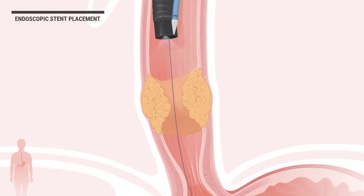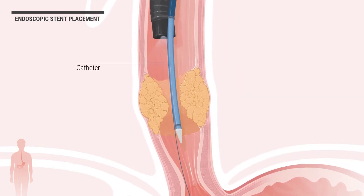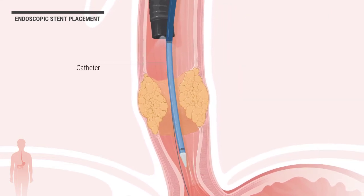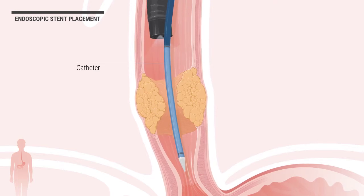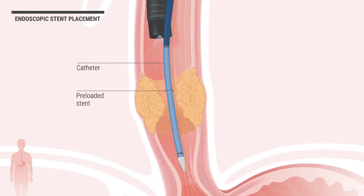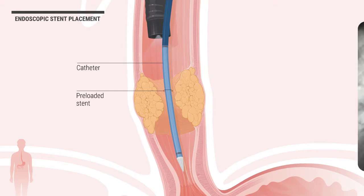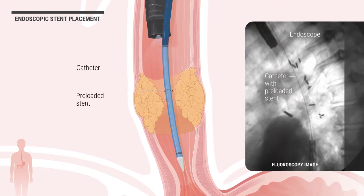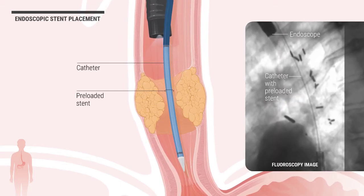Then, a specialized catheter — a thin tube — is slid over the guide wire and placed adjacent to the tumor. The catheter contains a preloaded stent. The guidance and placement of the catheter is also performed with endoscopic and fluoroscopic observation to ensure correct positioning.